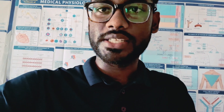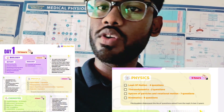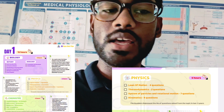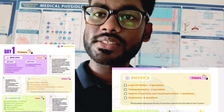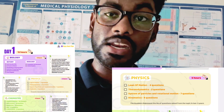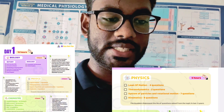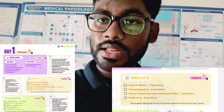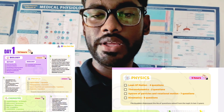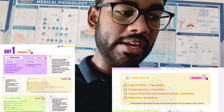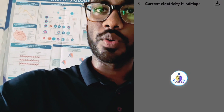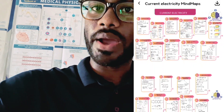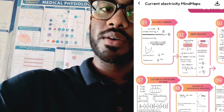Then go with physics. In physics, you have 5 hours. There are 4 chapters: Laws of Motion, Thermodynamics, System of Particles and Rotational Motion, and Kinematics. In the last 5 years, Laws of Motion had 4 questions, Thermodynamics had 2 questions, System of Particles and Rotational Motion had 7 questions, and Kinematics had 9 questions. Knowing this helps you understand the importance of each chapter. In the memory tab, there are mind maps under Brahmastra Revision. Download and print the mind maps — you can finish a lesson in 1 or 2 pages — then read the previous year questions. You will have 20 PYQs in physics.